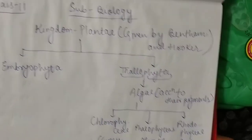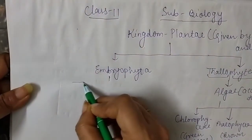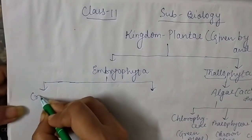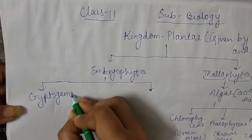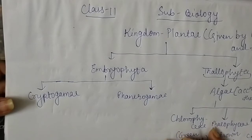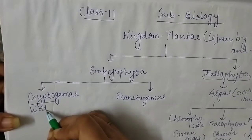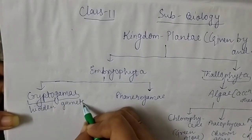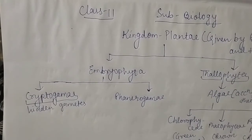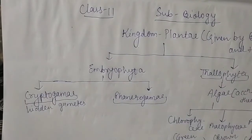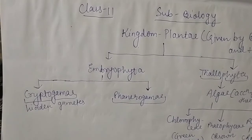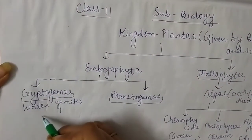The next part of Kingdom Plantae is Embryophyta. Embryophyta is divided into two parts: first is Cryptogamy and the other is Phanerogamy. 'Crypto' means hidden and 'gamy' means gametes — plants whose sex organs are hidden and cannot be seen externally are called Cryptogamy. Phanerogamy refers to plants whose sex organs are visible and which form flower-like structures.